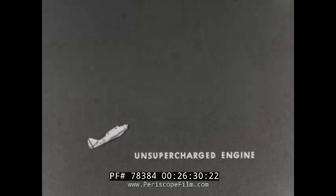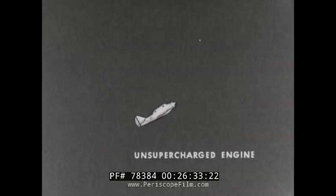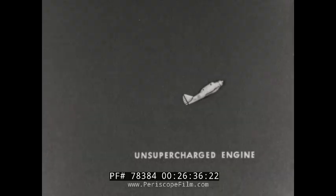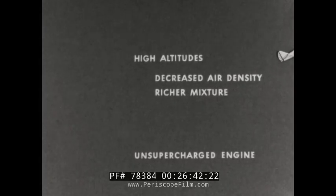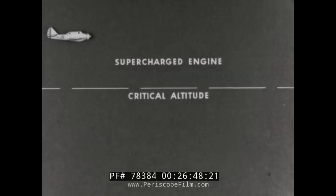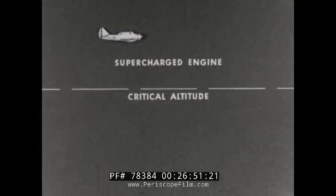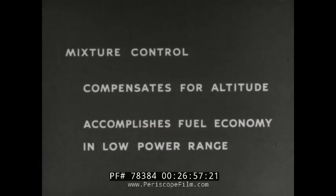With the unsupercharged engine ascending to higher altitudes, the weight of the air charge decreases. The fuel charge decreases also, but at a lower rate. The mixture therefore becomes richer. This is also true of the supercharged engine above critical altitudes. All airplane engine carburetors have a mixture control, whose purpose is prevention of too rich mixtures at high altitudes and affecting a fuel economy in the low power range, where cylinder temperatures will not become excessive with a leaner mixture.